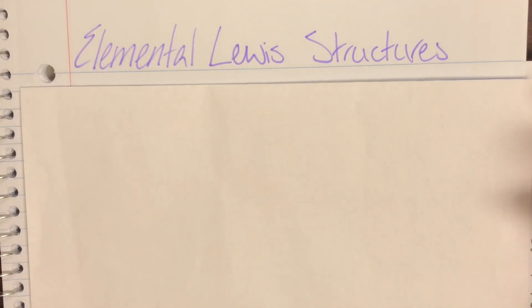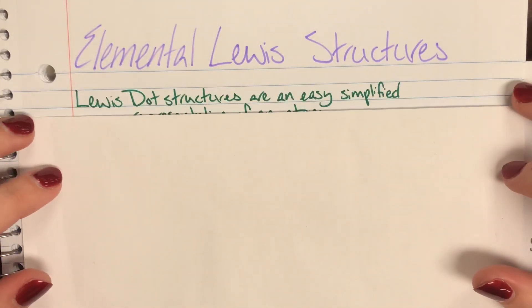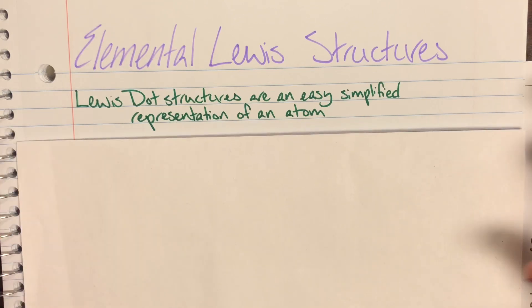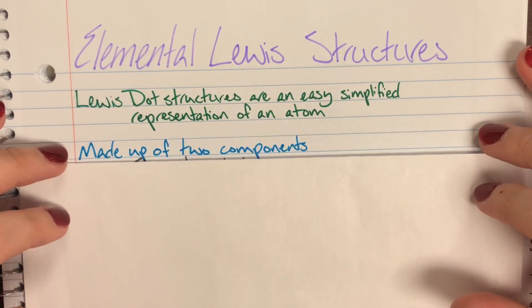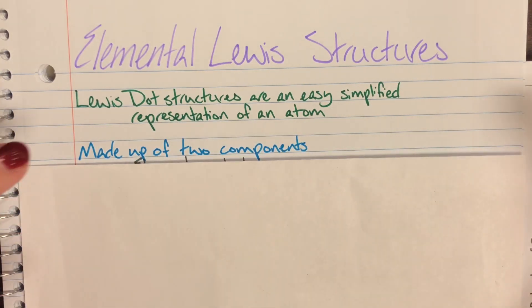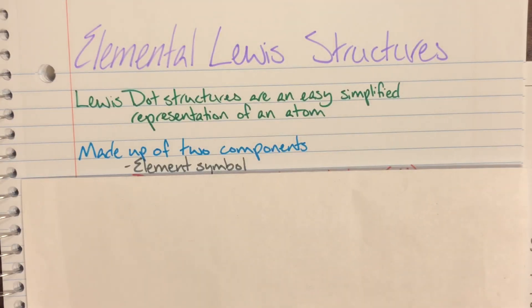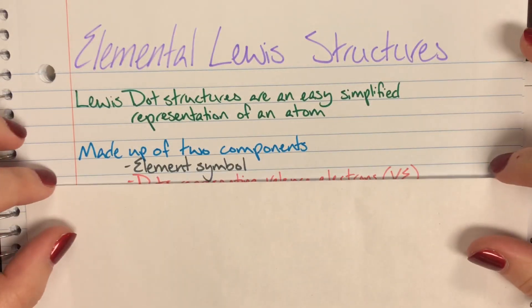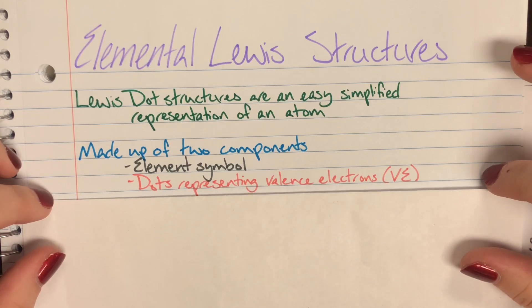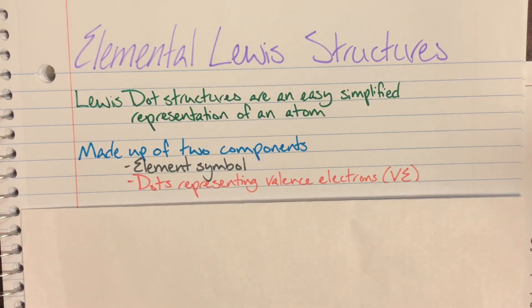Today we will be discussing elemental Lewis dot structures. Lewis dot structures are going to be a very easy and simplified representation of an atom. It is only showing us two things. We have the element symbol which is directly off of the periodic table and then we have dots around that symbol that are going to represent our valence electrons.